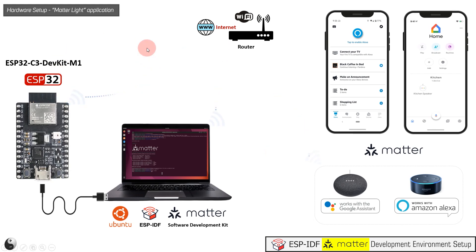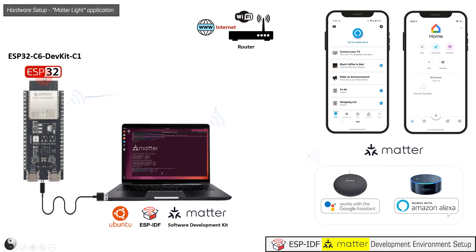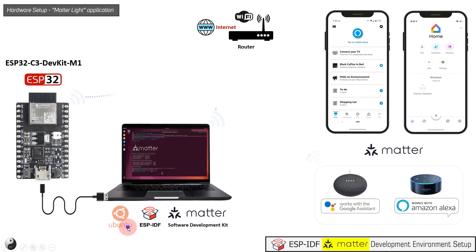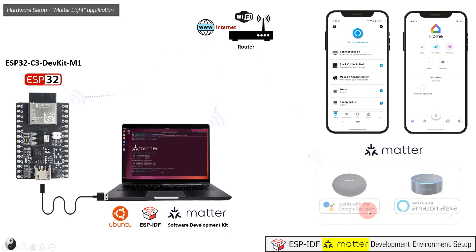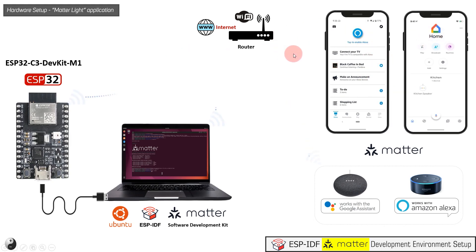As shown in the diagram, this is the hardware setup for a Matter light application. We are using ESP32-C3 and C6 development boards, which will be connected to a laptop running Ubuntu 22.04 with ESP-IDF and Matter SDK installed. We will also use Matter-enabled smart speakers like Amazon Echo Dot or Google Home Mini, and a smartphone with the Alexa or Google Home app. All hardware will be connected to the home Wi-Fi router.